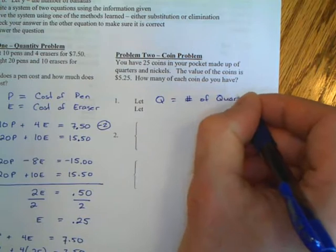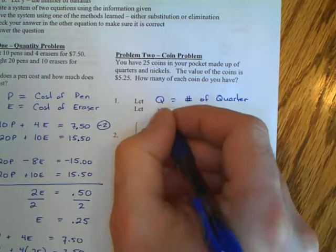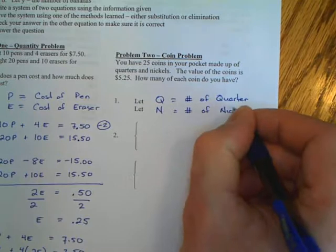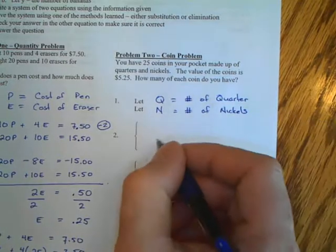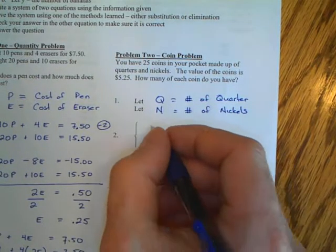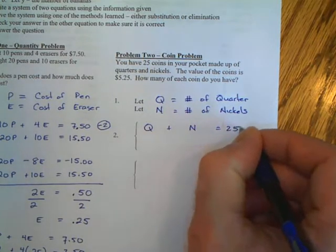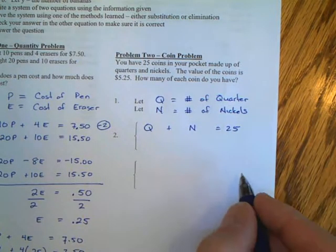We have coins, which is very similar to the problems we just did. We have two variables, quarters and nickels. So I'm going to say Q equals the number of quarters. It doesn't equal the value of a quarter because we already know that. N equals the number of nickels that we have.